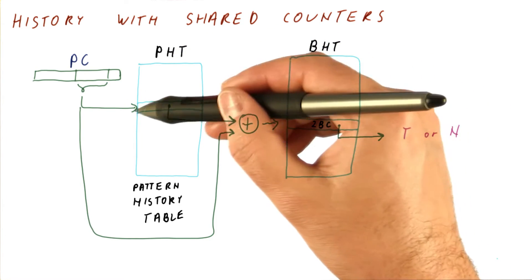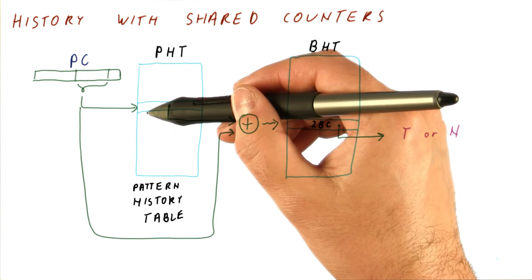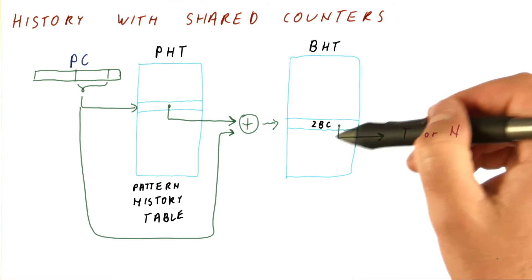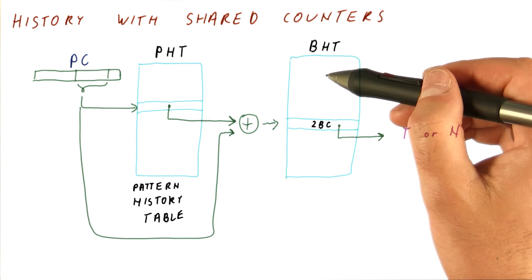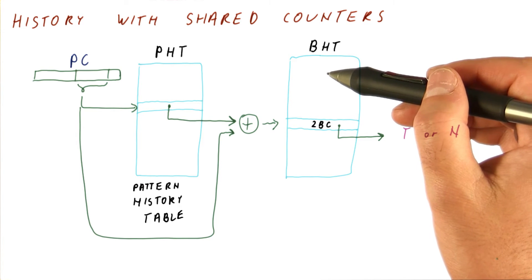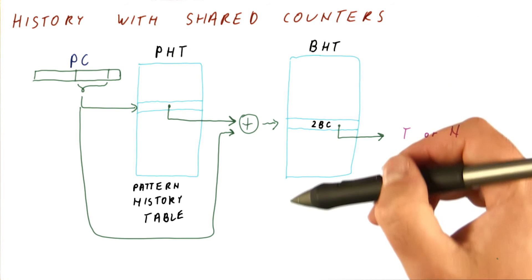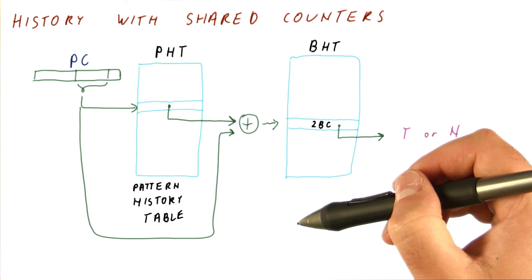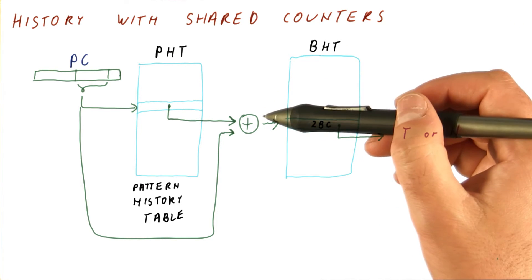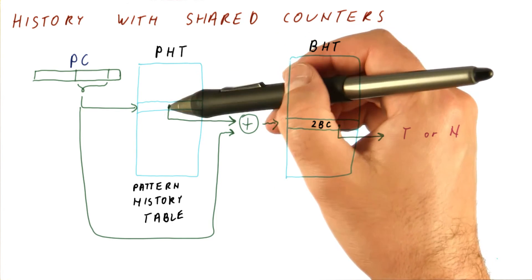Of all the possible histories, where there is like two to the nth of them, we're really using only a very small number of counters, because very few histories are actually happening. And that means that if we have a relatively large array of two-bit counters, the possibility of conflict is very low. But this allows us to have a lot of bits of history.